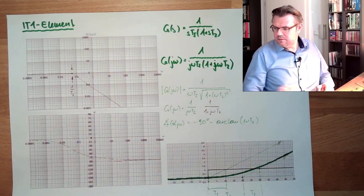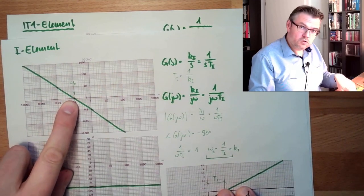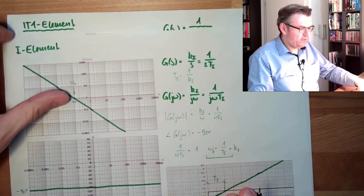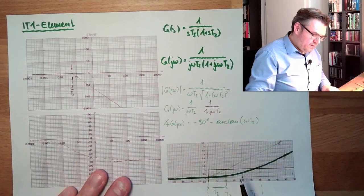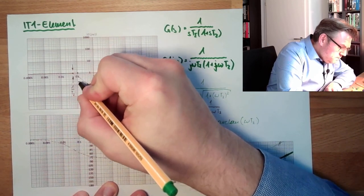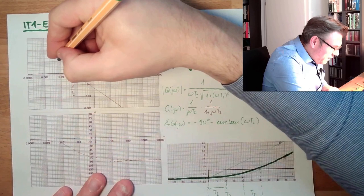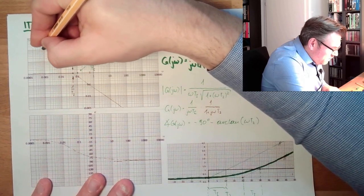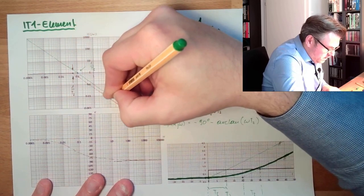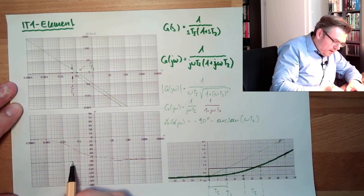For the I element part: the crossover frequency is ω = 1/Ti. With Ti = 10, that is 1/10 = 0.1 rad/s. The I element magnitude drops at −20 dB/decade through this crossover frequency, and its argument is always −90 degrees.